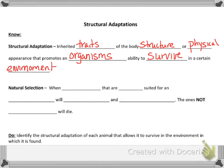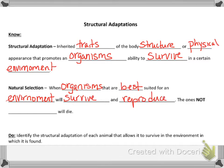And that goes with natural selection. Natural selection is when organisms that are best suited for an environment will survive and reproduce. The ones not suited will die, and that will keep the better genes around so that they can stay in that environment where they are most fit to live.